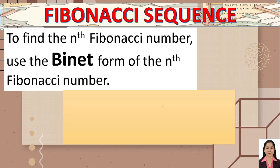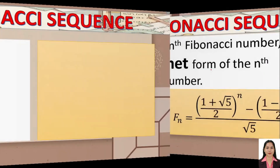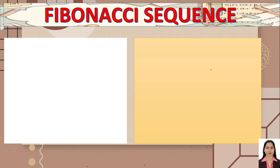The Binet formula is: f-sub-n equals the quantity (1 plus the square root of 5) over 2, raised to n, minus the quantity (1 minus the square root of 5) over 2, raised to n, all divided by the square root of 5. This formula is used to find the nth term of the Fibonacci sequence.